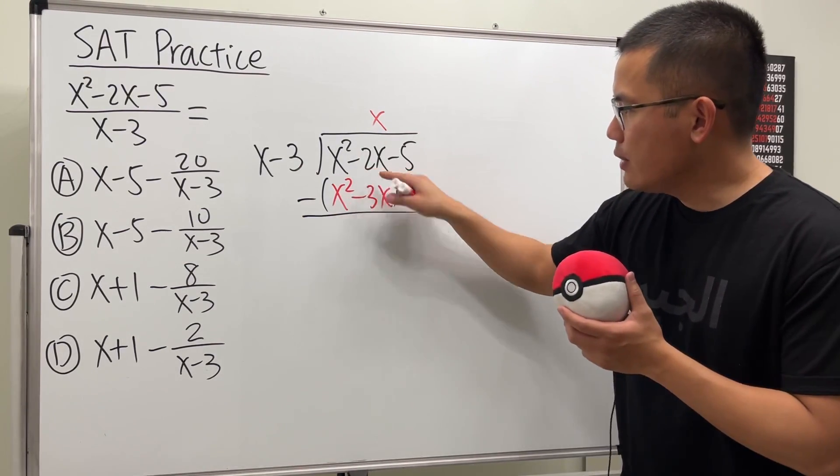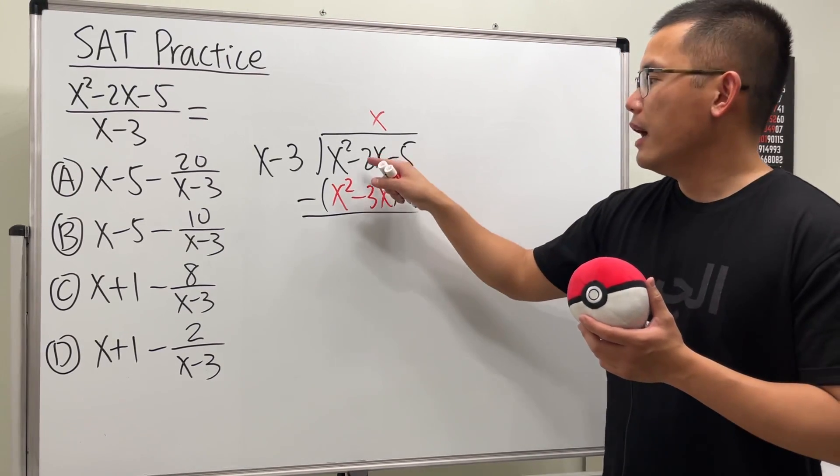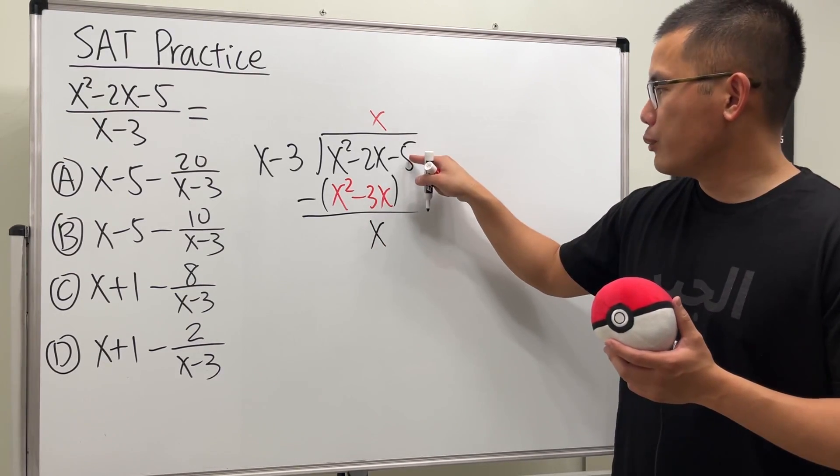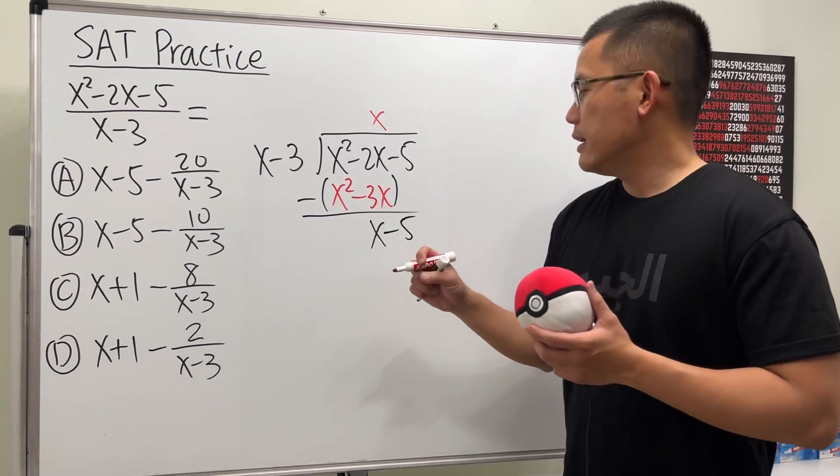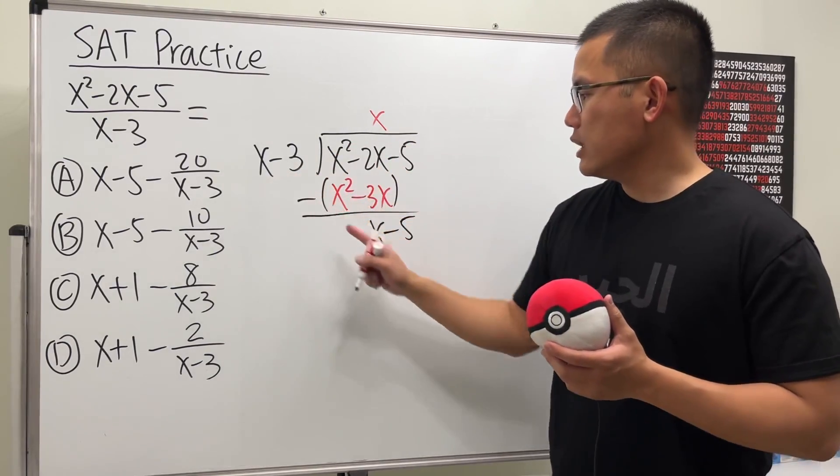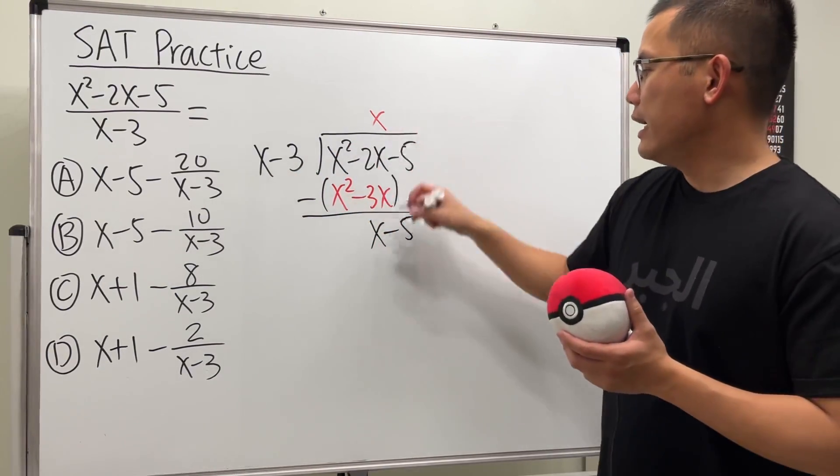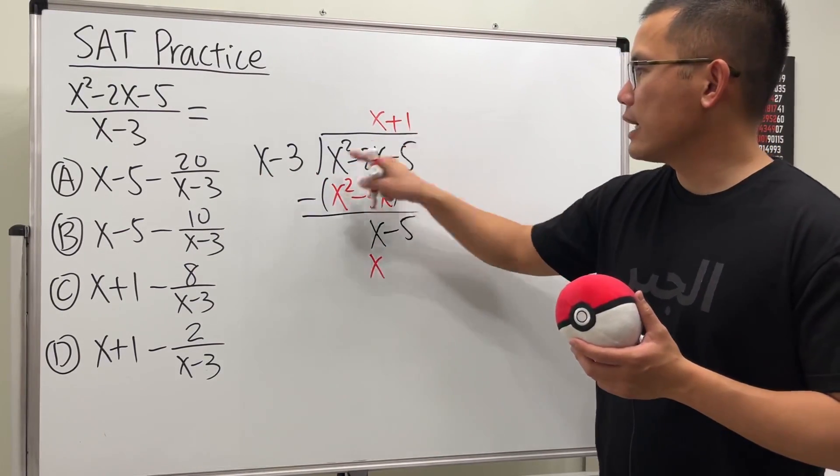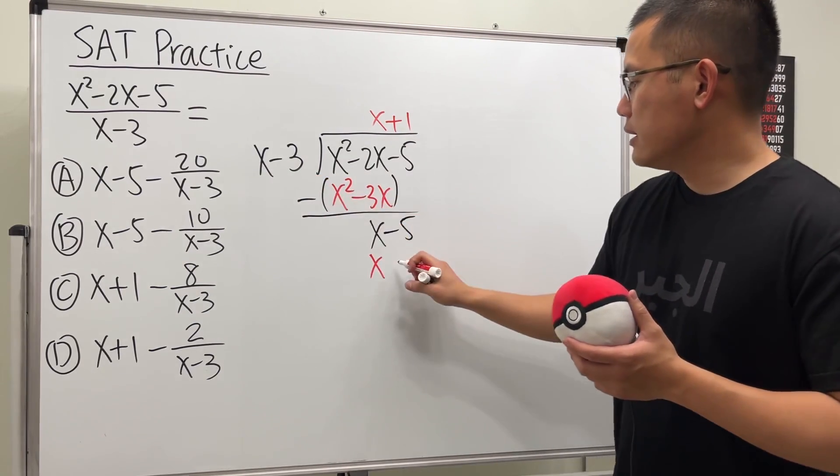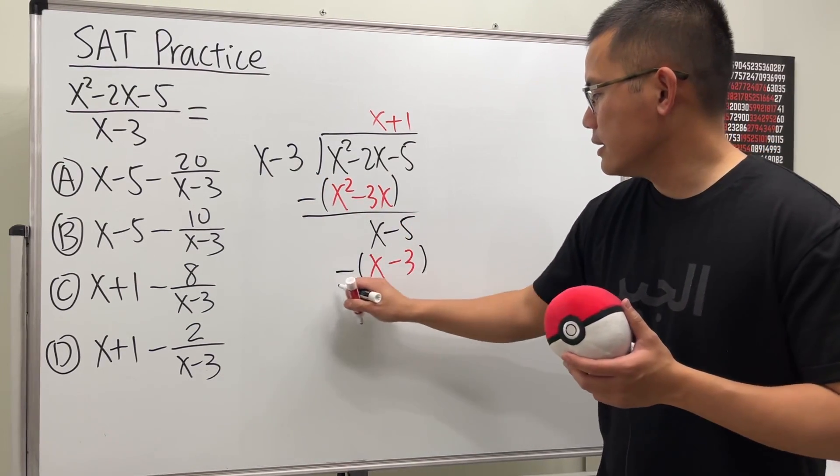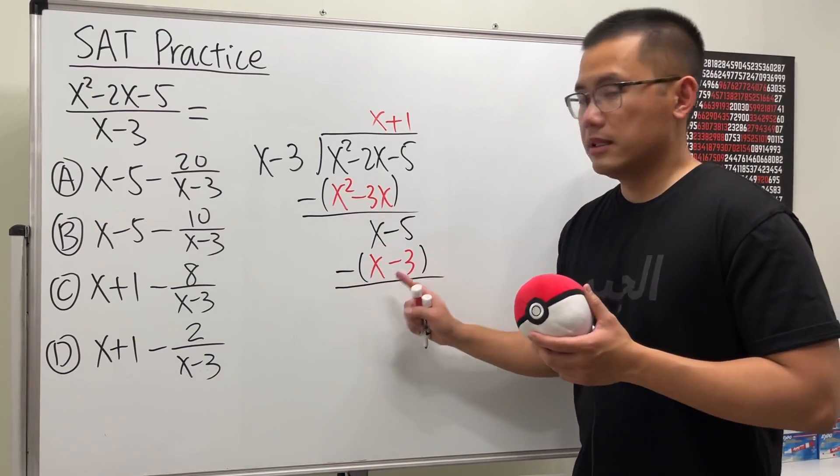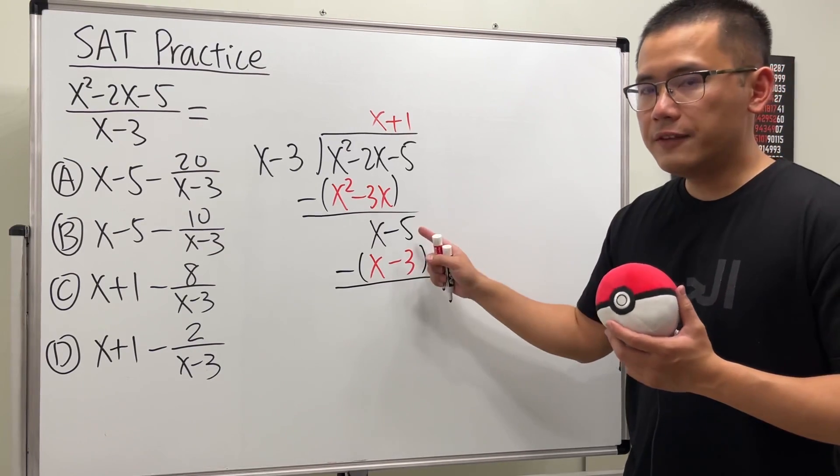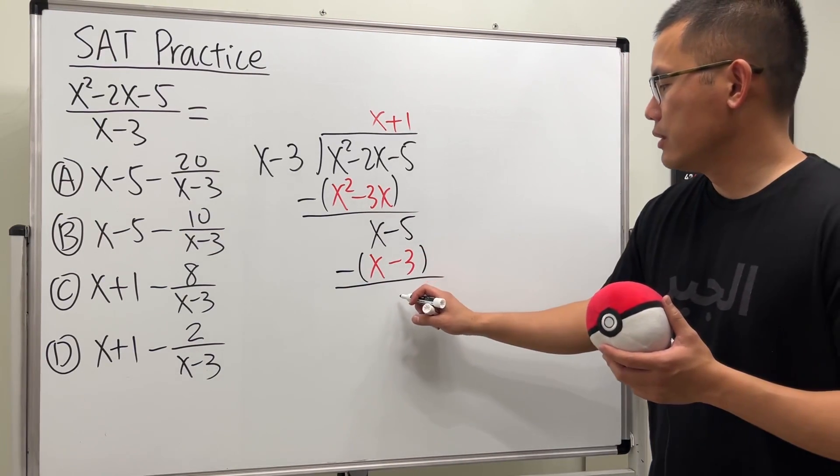Next, negative 2x minus minus becomes plus. Negative 2x plus 3x, we get x. All right, and then bring down the negative 5. And what times x will give us x? Well, 1 times x will give us x. And it's a positive 1, so we have the plus 1. 1 times x is x. 1 times negative 3 is negative 3. And then again, we subtract like this. x minus x is zero. And then negative 5 minus minus becomes plus. Negative 5 plus 3 is negative 2.